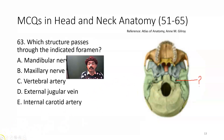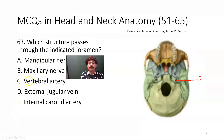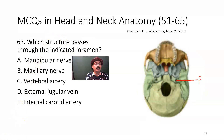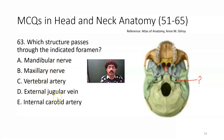Which structure passes through the indicated foramen? This is the carotid canal. What should be the content? Options: mandibular nerve, maxillary nerve, vertebral artery, or external jugular vein.